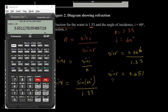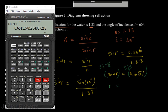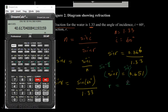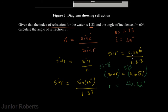Since sine r equals 0.651, we take the inverse sine of both sides to isolate r. Taking sine inverse of sine r leaves just r. Using the calculator: shift sine of 0.651 gives 40.62 degrees. Therefore the angle of refraction r is 40.62 degrees.